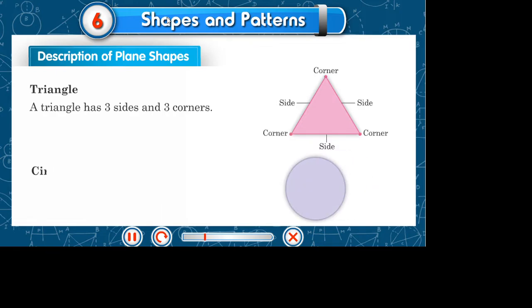Description of plane shapes. Triangle: A triangle has three sides and three corners. Circle: A circle does not have any side or corner.